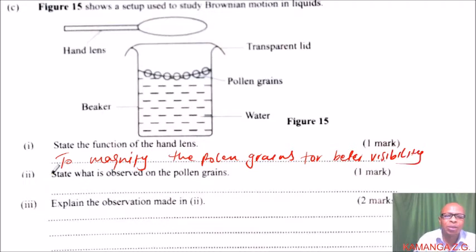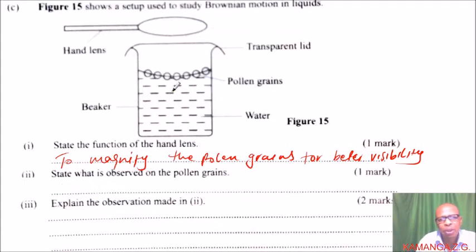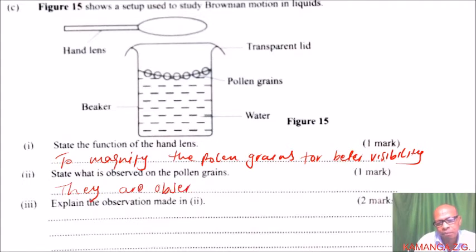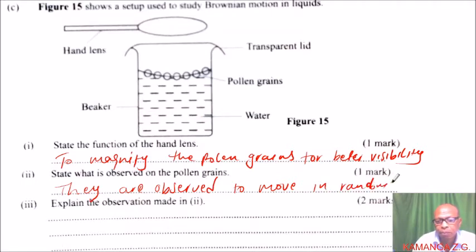The pollen grains are very light, tiny particles. Because they are placed in water, what you observe is that the pollen grains are moving in a random manner — they are observed to move in random motion.